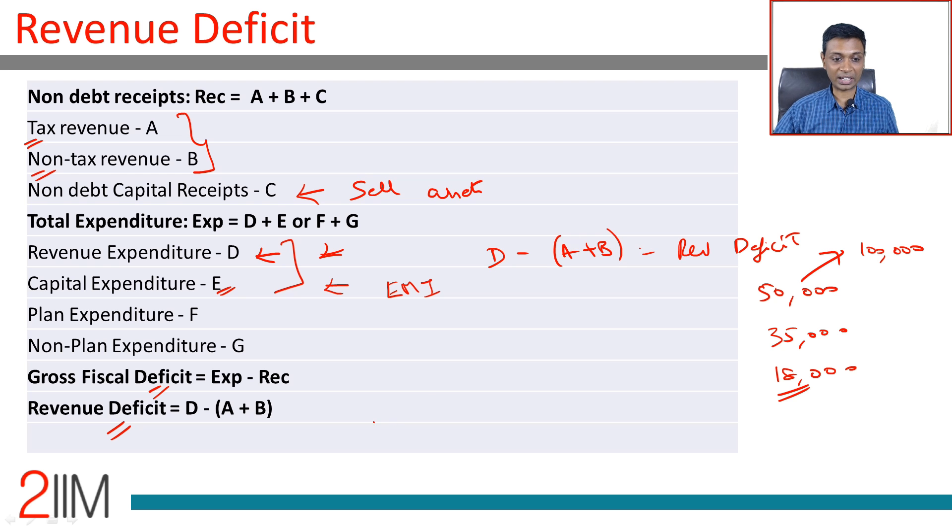However, if you have a revenue deficit, means you earn 50,000, just rent, food, all kinds of entertainment - that is 60,000. You have to borrow to sustain your current lifestyle, you are in trouble. So fiscal deficit is all right, revenue deficit is not all right. Revenue deficit is a risky thing. You are going into a loop where if you are continuously having revenue deficit, you will need to keep on borrowing more and more amounts. That spells trouble. Fiscal deficit, not so much.